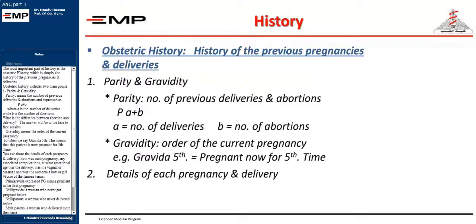Previous surgical operations, whether obstetric operations like previous cesarean section, or gynecological operations done to non-pregnant genital organs like myomectomy, affect the way of delivery. History of blood transfusion is important especially in Rh-negative patients. The most important part of history is the obstetric history, which is simply the history of the previous pregnancies and deliveries. Obstetric history includes two main points: parity and gravity.